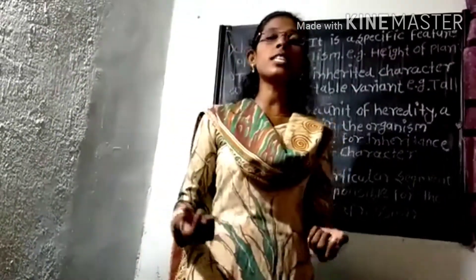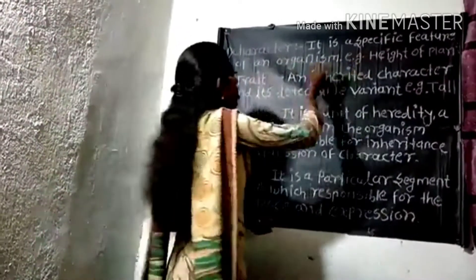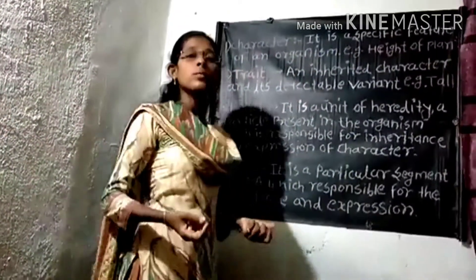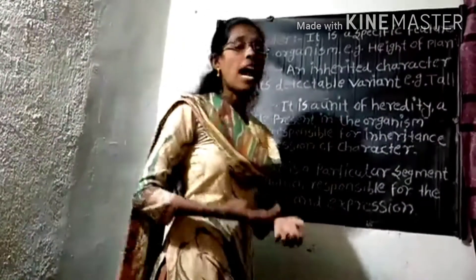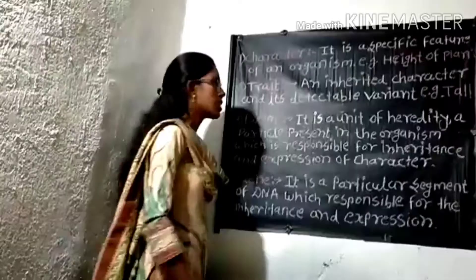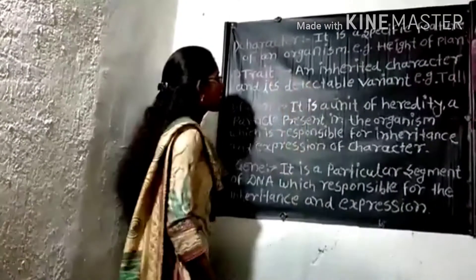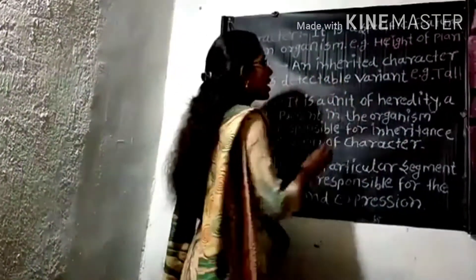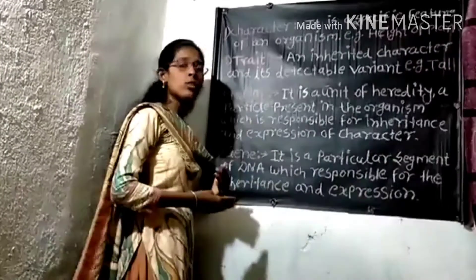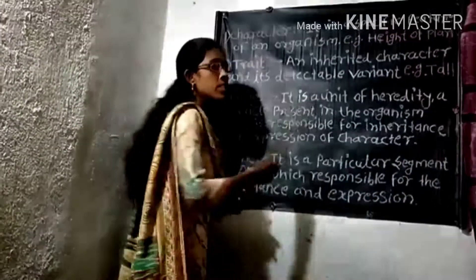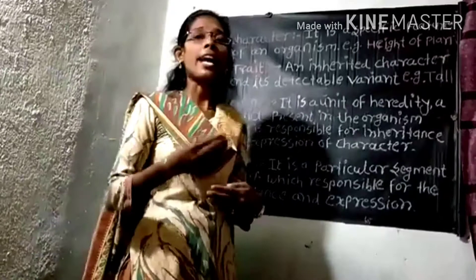The first term of genetics is 'character.' Character is the specific feature of an organism. All organisms have some specific features — for example, a plant has height, and height is the specific feature of a plant. The next term is 'trait.' Trait is an inherited character and its detectable variant, meaning it is inherited from parent to offspring and can be seen with your eyes — for example, tall and dwarf.